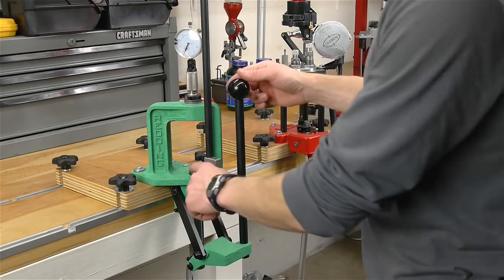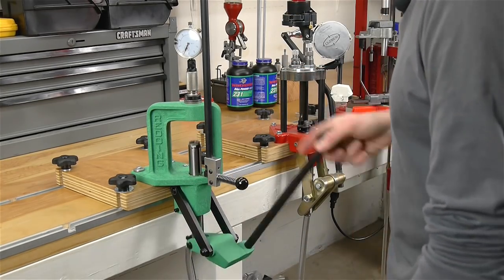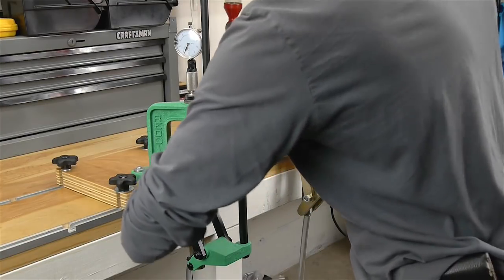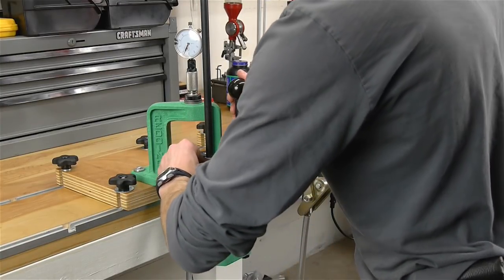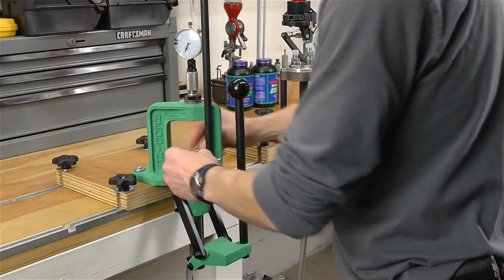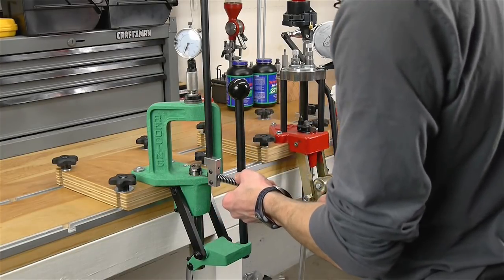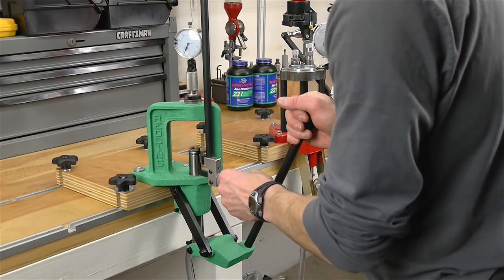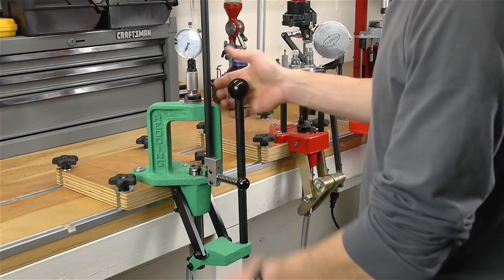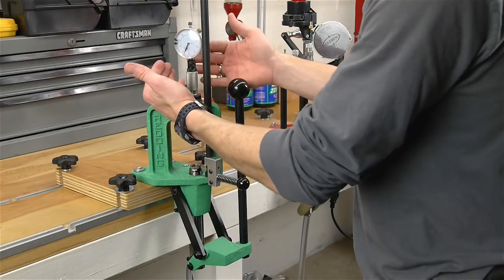With this reloading press we have good leverage because we're only working on one cartridge at a time. We can easily take the shell holder in and out and replace that for different types of cartridges that we might want to reload. This particular press features a priming system where it can pick up primers and then prime the case on the way down. So this is a good sturdy reloading press, it's very simple, but you've only got one die set up.